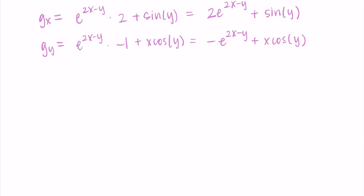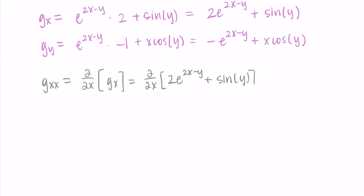Now that I have my two first partial derivatives, I can find the second partial derivatives. Starting with g differentiated with respect to x twice: I take the partial derivative with respect to x of 2e^(2x - y) + sin(y). The derivative of 2e to the something is 2e to that something times the derivative of the exponent, which is times 2. The derivative of sin(y) with respect to x is 0 since it's a constant. Simplified: 4e^(2x - y).